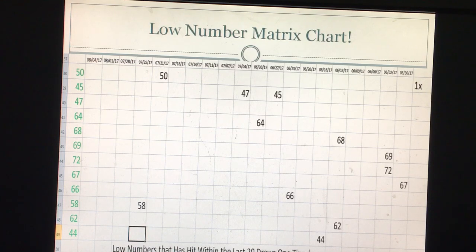As you can see, 50, 45, 47, 64, 68, 69, 72, 67, 66, 58, 62, and 44 were the first sets of known numbers in your matrix chart.